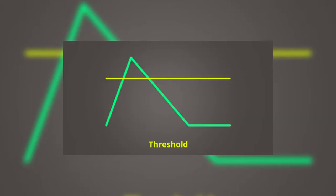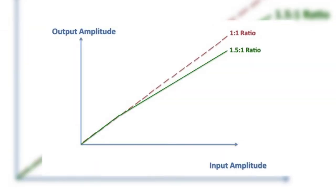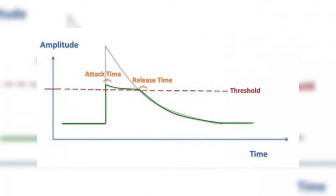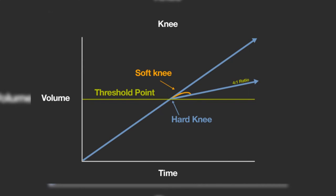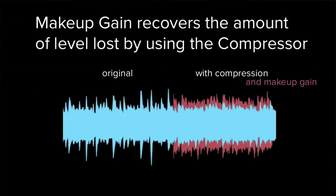How do we control these things? The threshold is the loudness at which compression is applied. Ratio is the amount of compression being applied. Attack is the amount of time before a compressor kicks in. Release is the amount of time before the compressor effect fades out. The knee changes the behavior of the threshold once it's crossed — hard knee is a quick change and soft knee is a slow change. Makeup gain automatically boosts the gain to compensate for the gain lost from compression.